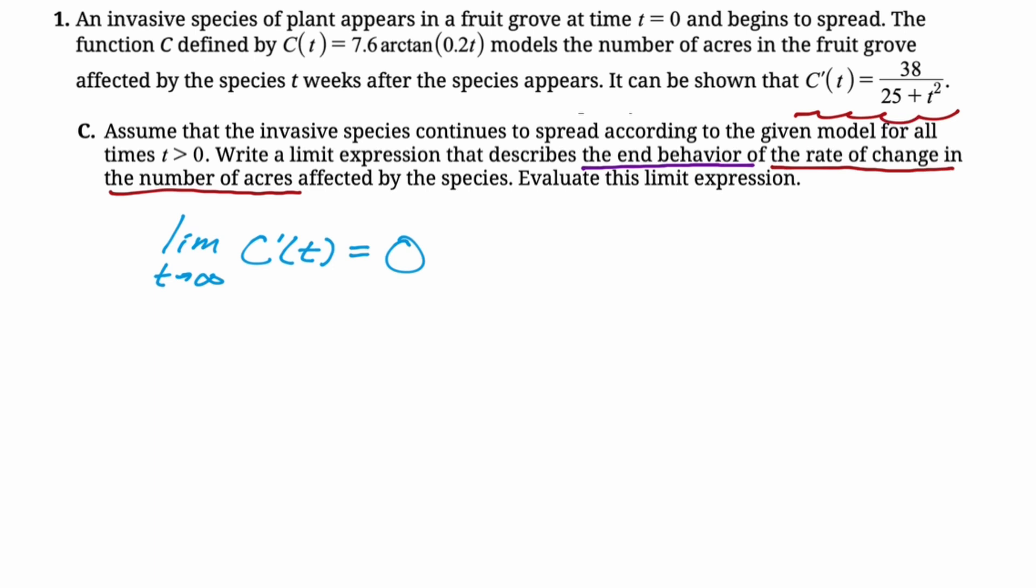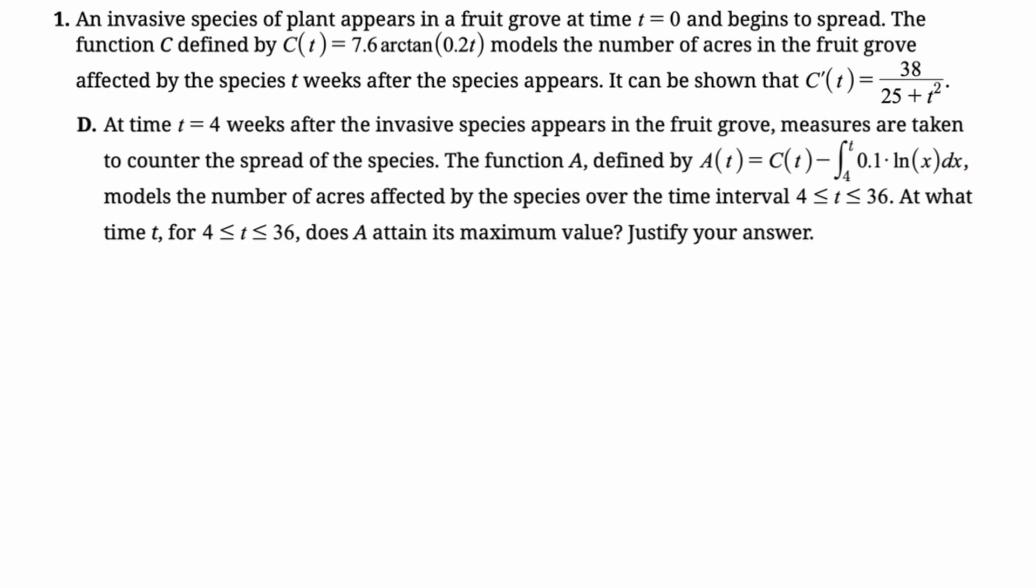Let's take a look at part D. So at T equals 4, 4 weeks after it shows up, we're going to try to counter it now. So the function A, defined by A of T equals C of T minus the integral from 4 to T of 0.1 natural log of x dx,